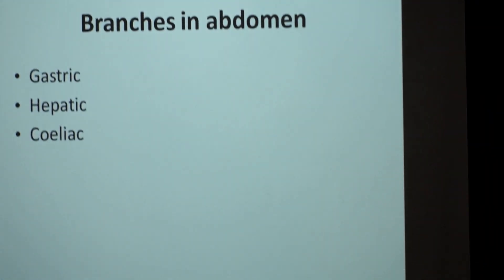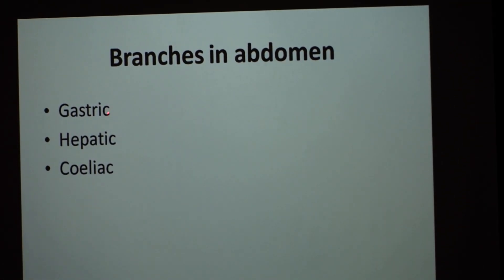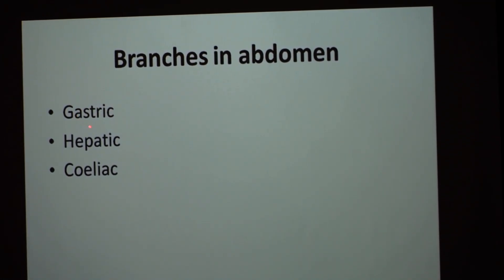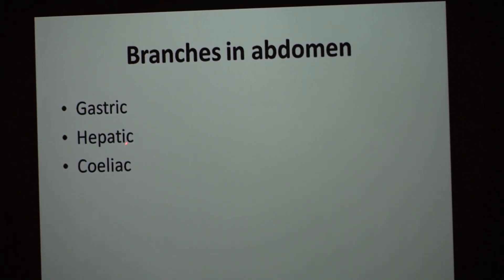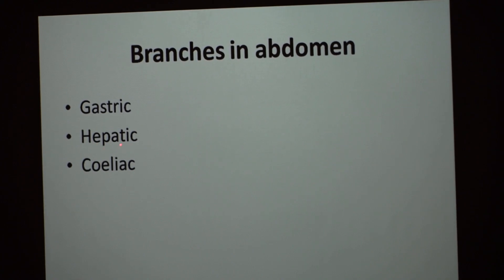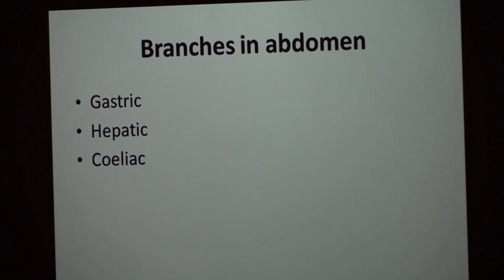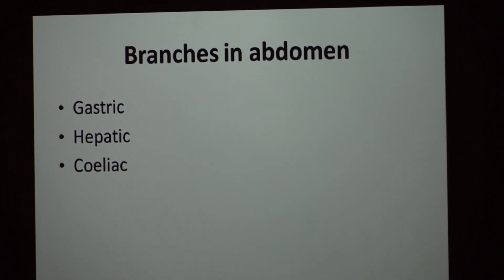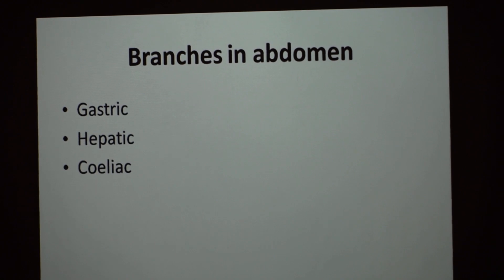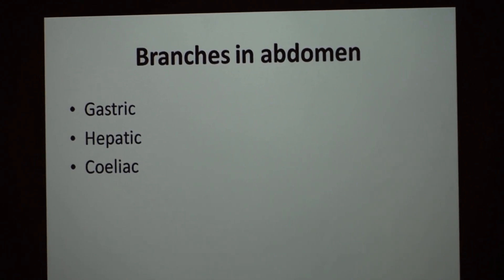Branches in the abdomen include three main branches: gastric branches to the stomach, hepatic branches to the liver and related structures, and celiac branches for the autonomic supply of the alimentary tract.